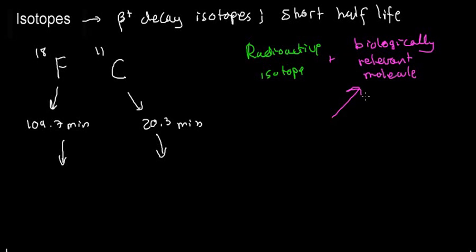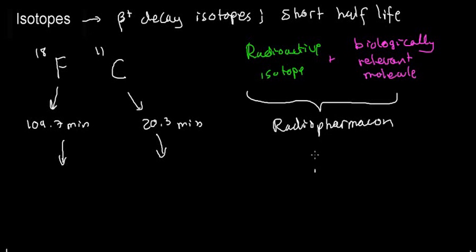That molecule has a specific role to play in our body. It goes to specific areas, gets absorbed in specific regions, so we know where to expect it and what we can check. When this is combined, it's called the radiopharmacon. This radiopharmacon is what I'm injecting into my patient. It will migrate and do a specific process in the body.